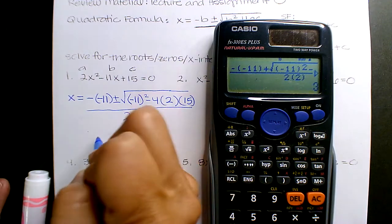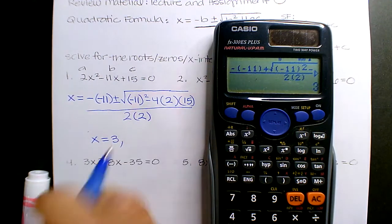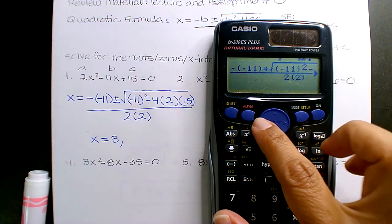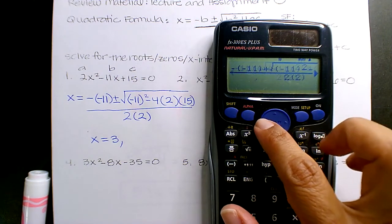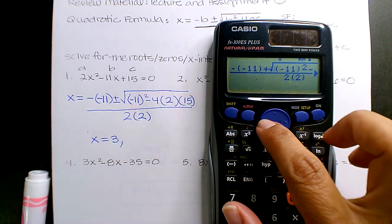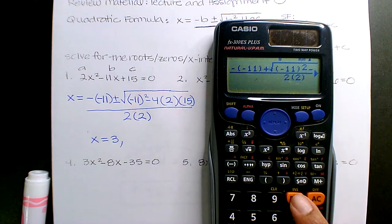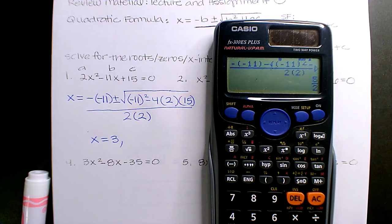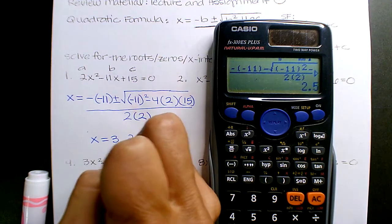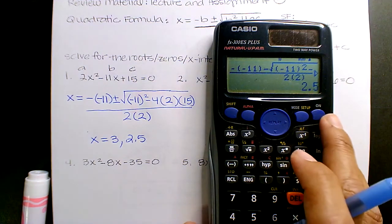I get 3. Go back. Back, back, back, all the way back. Delete the positive, hit the subtraction, hit equal, and I get 5 halves or 2.5. And that's it.